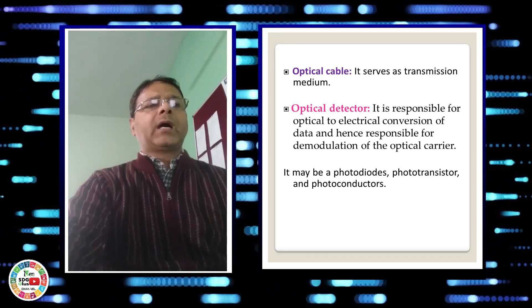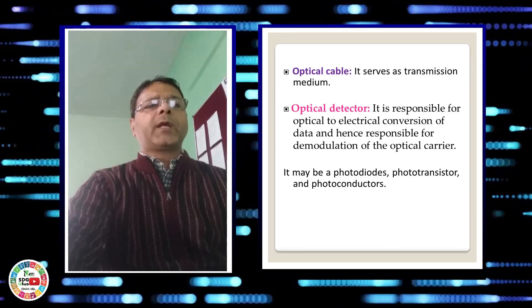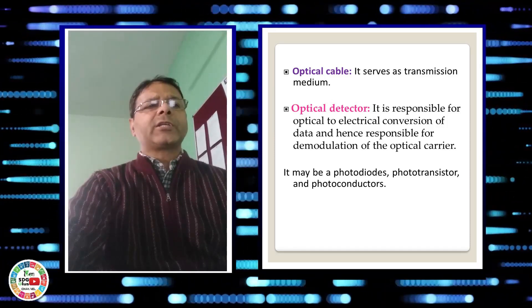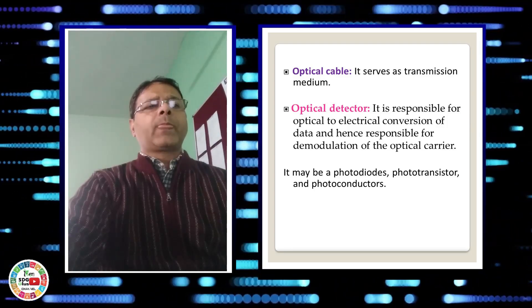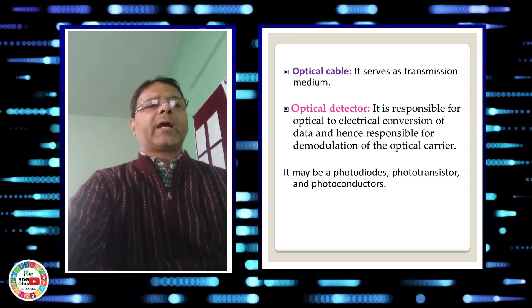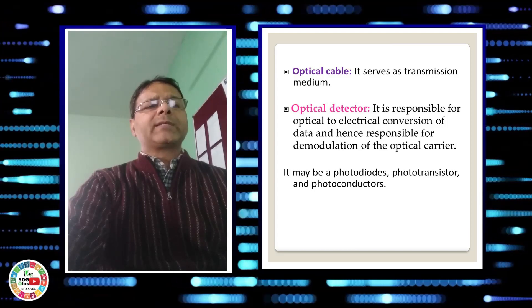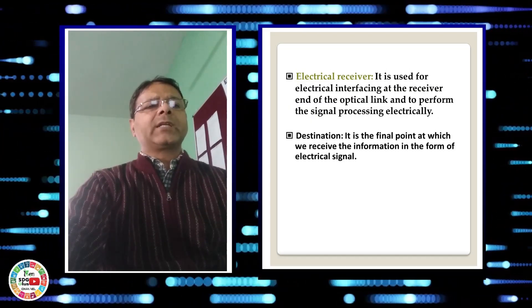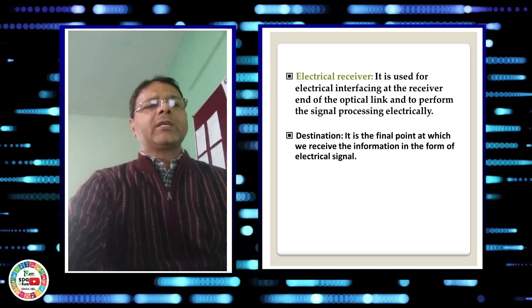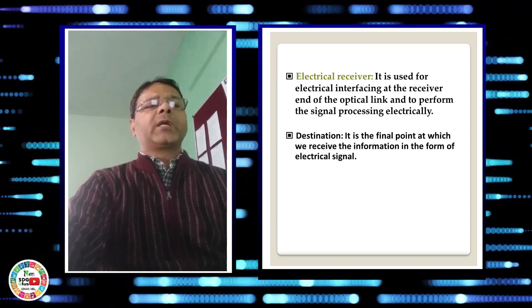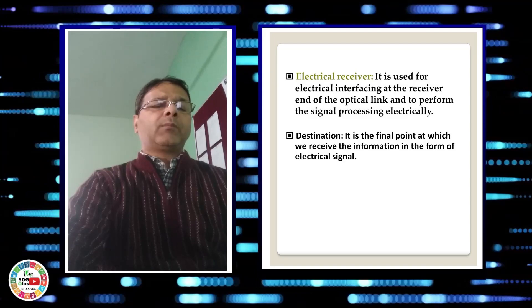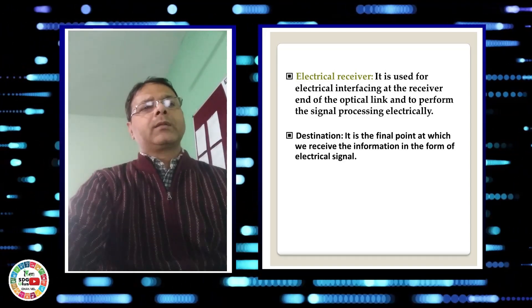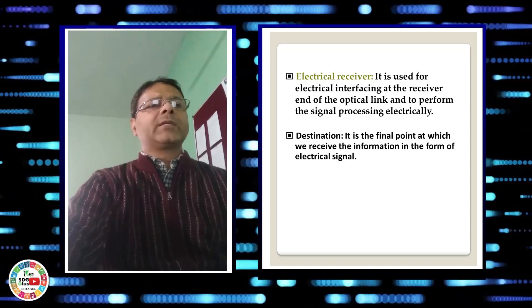The other three components which are optical detector, electrical receiver, and destination form the receiver. The optical detector converts light back into electrical signal, whereas electrical receiver is used to demodulate and amplify the signals, and destination may be the speaker, monitor, or LED or LCD.